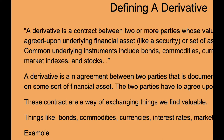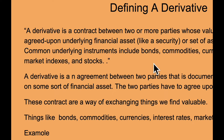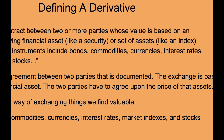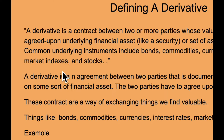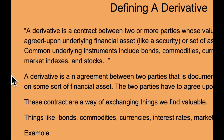Defining a derivative, which is part of hedging: a derivative is a contract between two or more parties whose value is based on an agreed-upon underlying financial asset, like a security or set of assets like an index. Common underlying instruments include bonds, commodities, currencies, interest rates, market indexes, and stocks. All those things are securities which are also derivatives — they are a financial instrument.